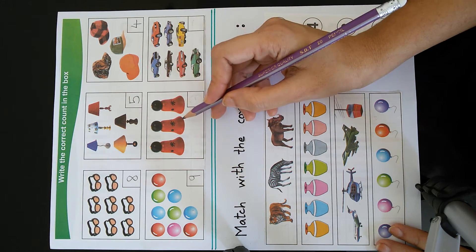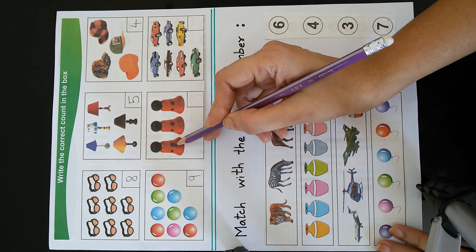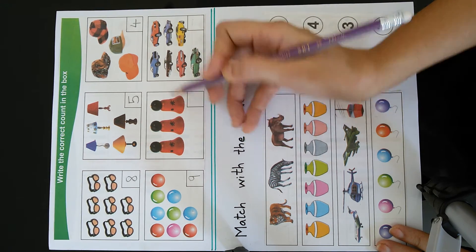This picture shows bells. How many bells are there? 1, 2, 3.